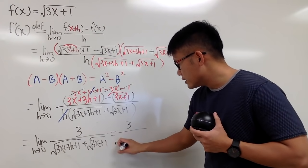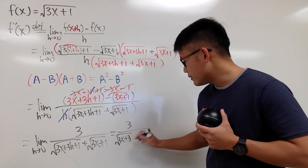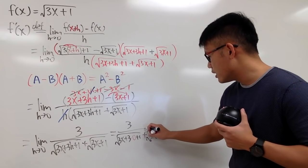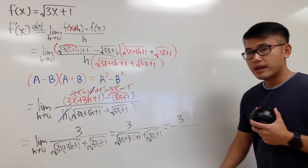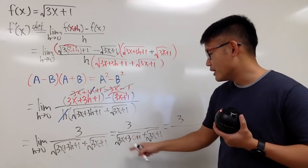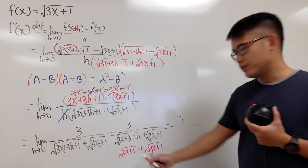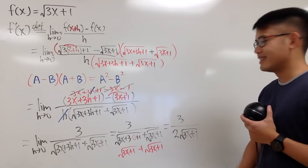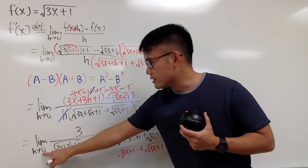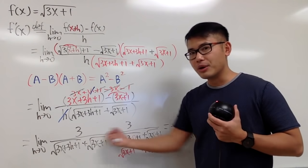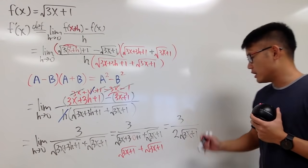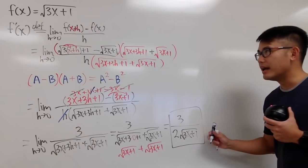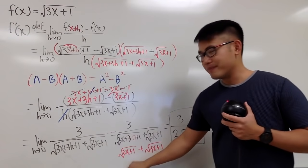You get 3 over square root of 3x plus 3 times 0 plus 1, plus square root of 3x plus 1. Since 3 times 0 is just 0, you have square root of 3x plus 1 plus another square root of 3x plus 1 — two of the same. You can combine them to get 2 times square root of 3x plus 1. So the final answer is 3 over 2 times square root of 3x plus 1. That's the derivative.